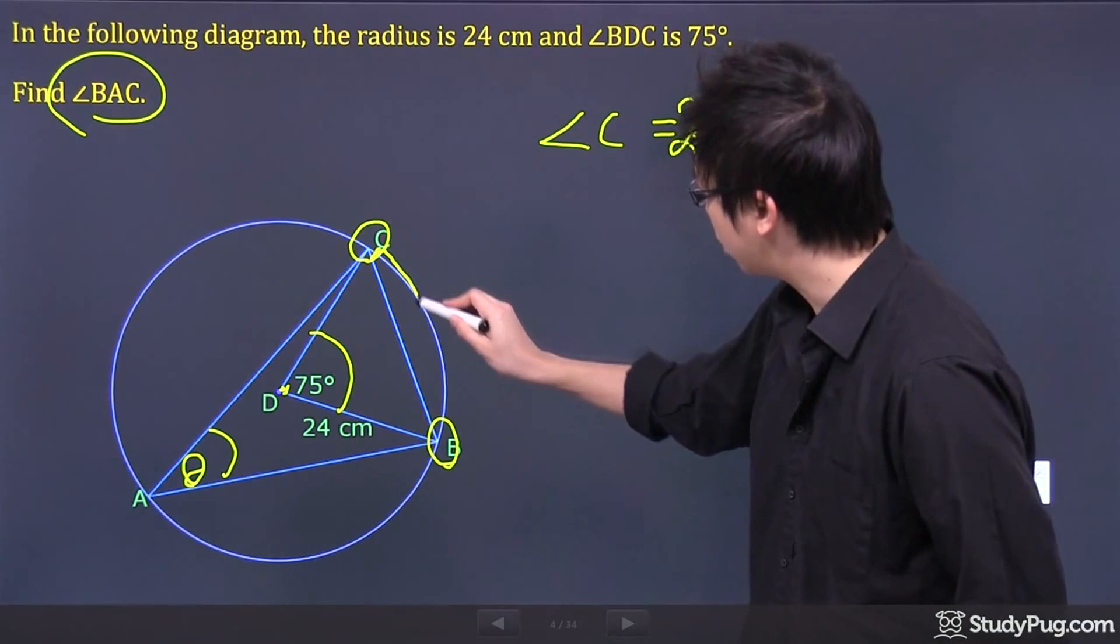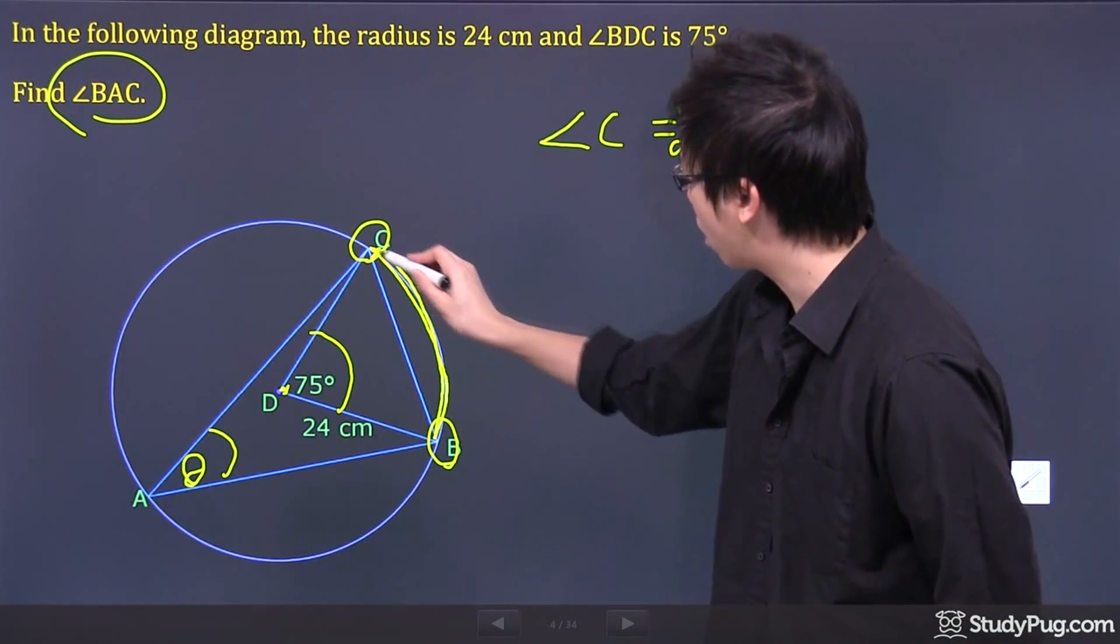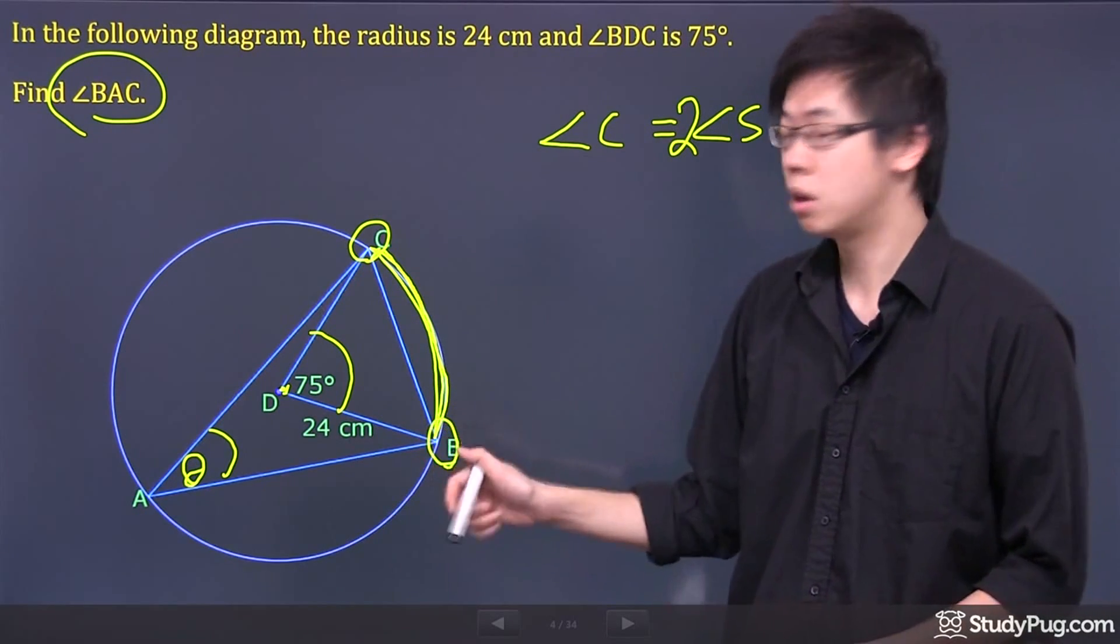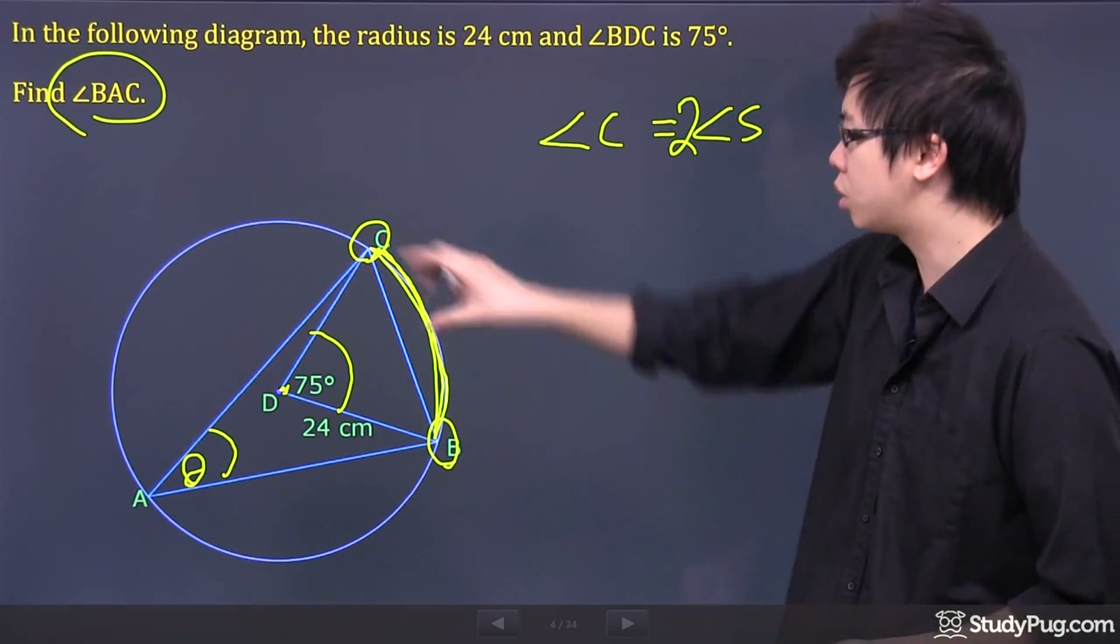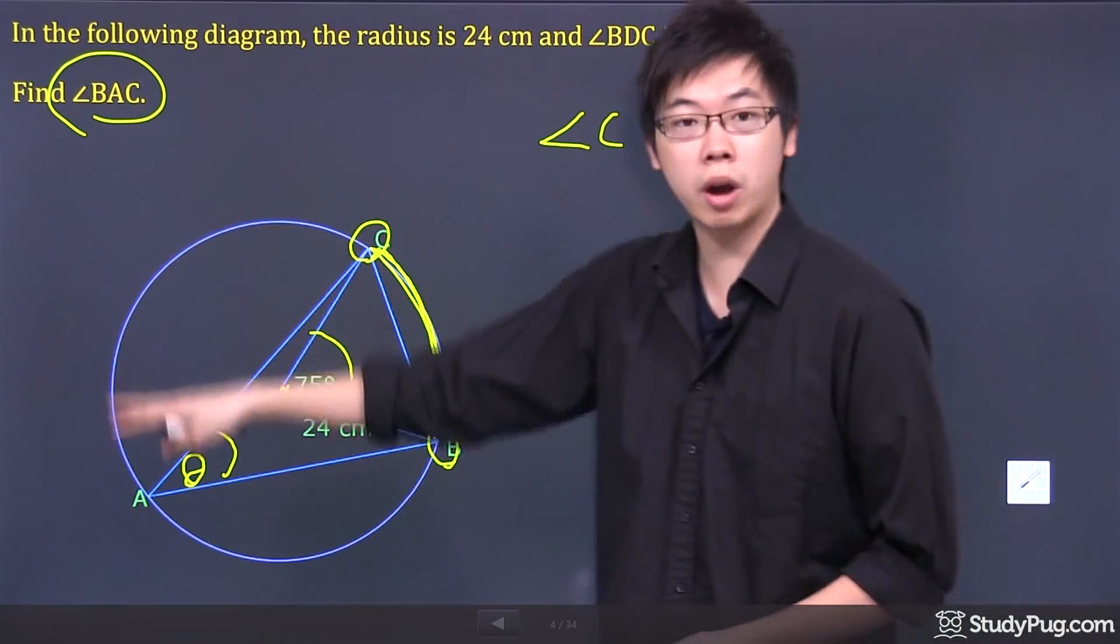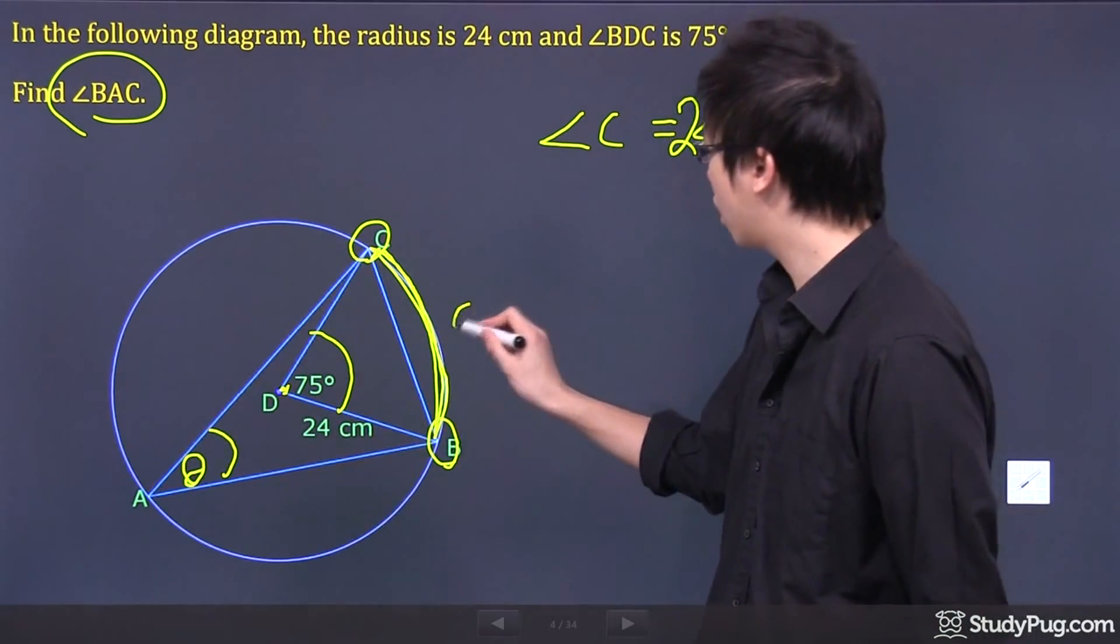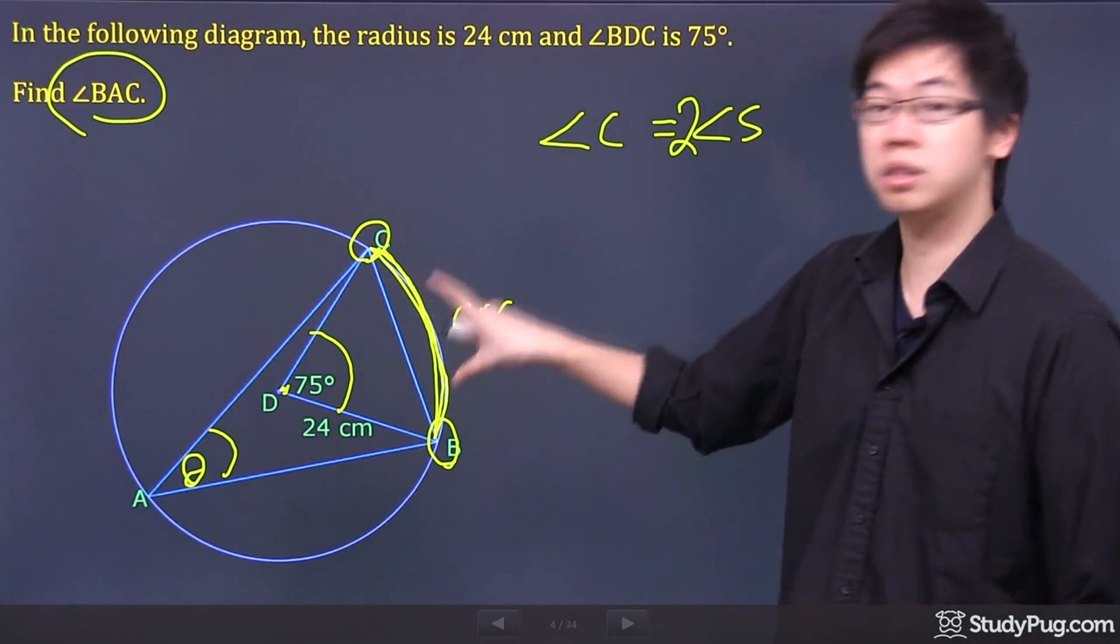Or they have the same arc length. You can actually look at the arc length right here. This is the arc length of the triangles. As long as they share the same arc length, it doesn't have to start from here to here. It could be somewhere else. As long as the arc, A-R-C, is the same.